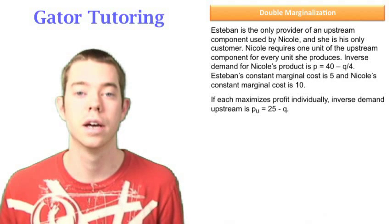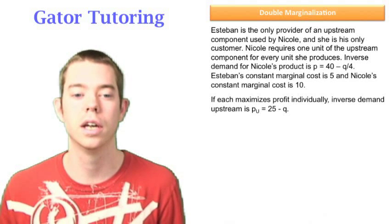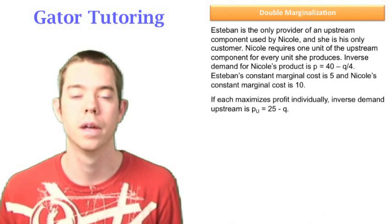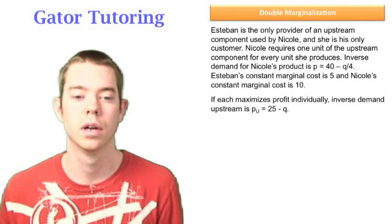The first question says, if each maximizes profit individually, inverse demand for the upstream firm is PU equals 25 minus Q. It's a true or false question, so let's take a look.